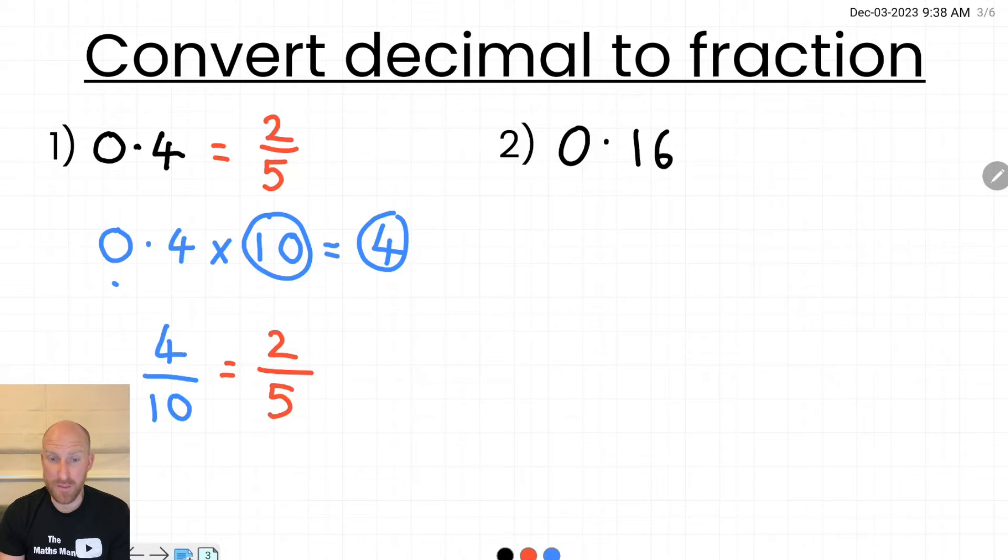Let's take a look at something that's a little bit more challenging. So here we have a decimal that has two decimal places, 0.16. So again I'm going to take that number 0.16 and I'm going to either multiply it by 10, 100 or 1000. Now this time I'm going to multiply it by 100 because that will give me the whole number of 16. If I would have multiplied it by 10 I would have got 1.6 and that's not a whole number.